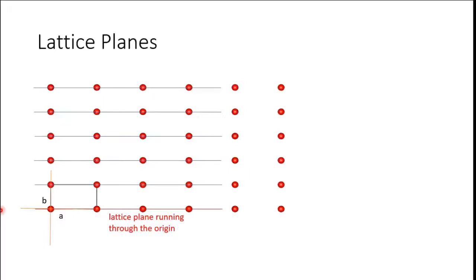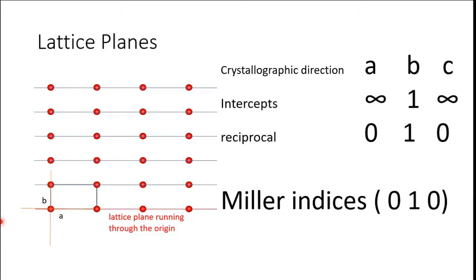Ab yeh third example hai jismein aapke paas plane parallel to A axis ke hai. Is case mein intercept along A direction — is blue plane ko aap consider karo, yeh blue plane kabhi is A axis ko intersect nahi karega, toh intersection point ho gaya at infinity. B axis ko intercept yeh karega at 1B, toh aapke paas intercept ki values ho gayi: A ke along infinity, B pe 1, aur C par again infinite. Reciprocal: 0, 1, 0 — so Miller Indices corresponding aapke aagaye 0, 1, 0.